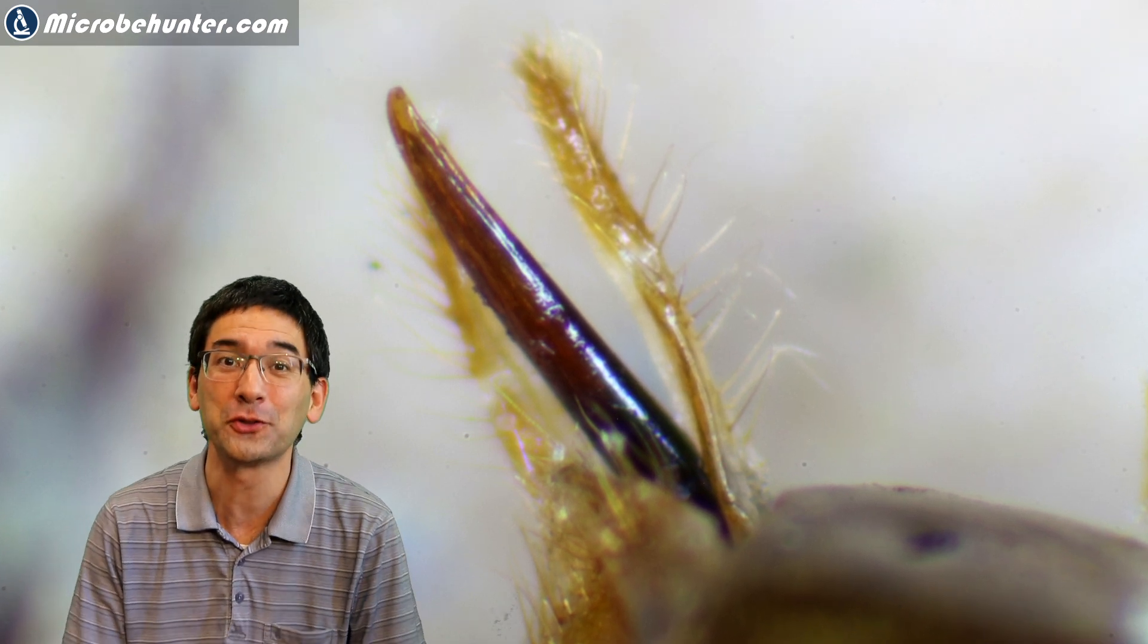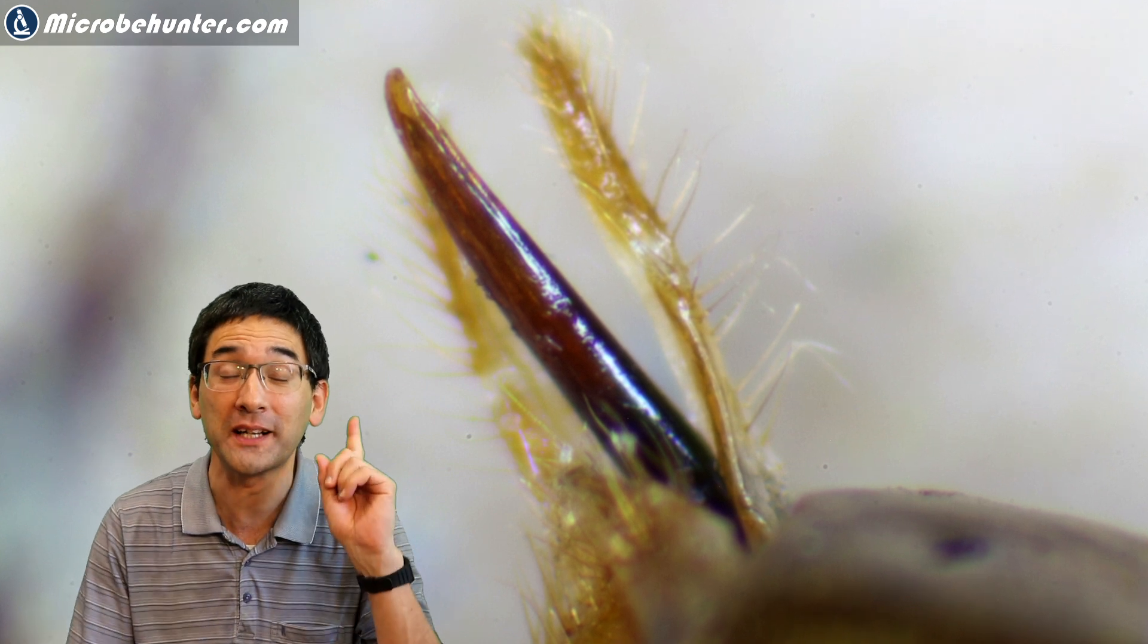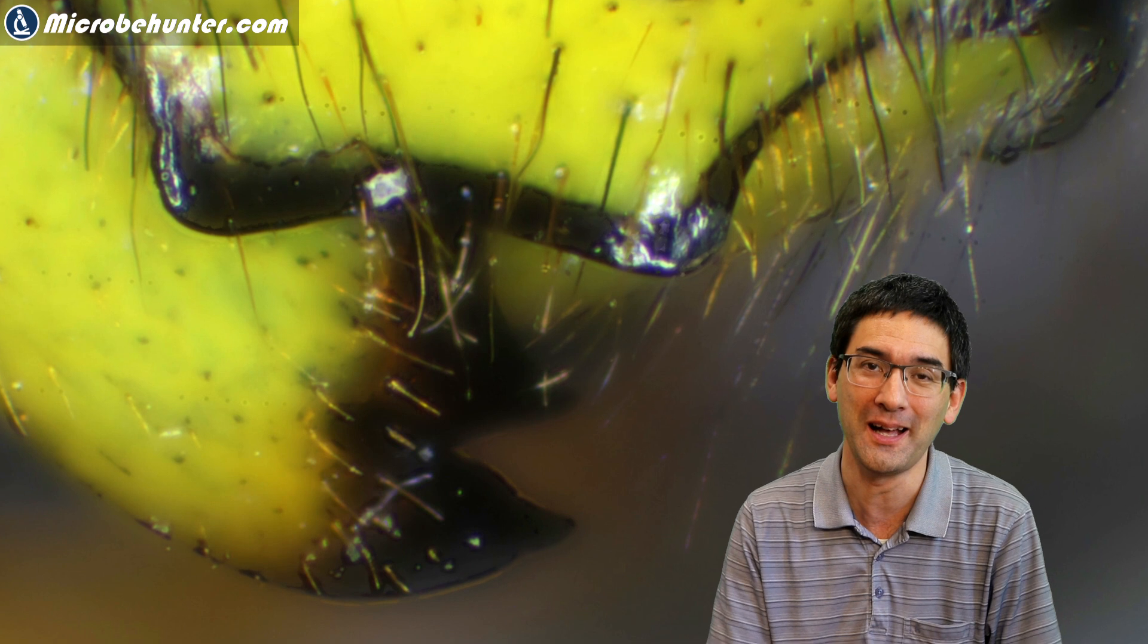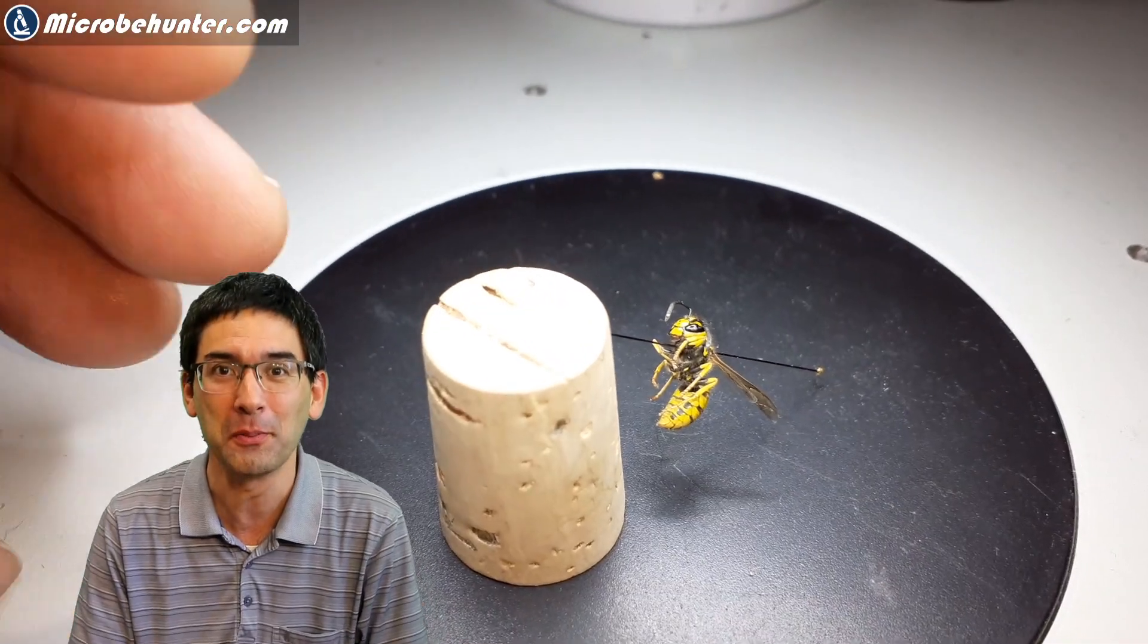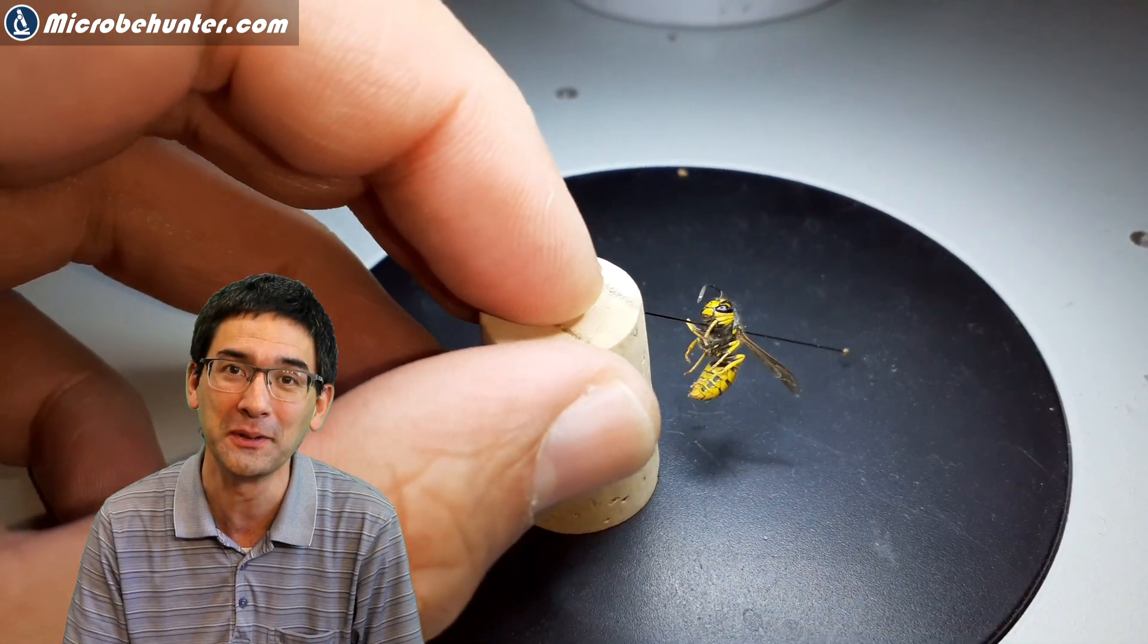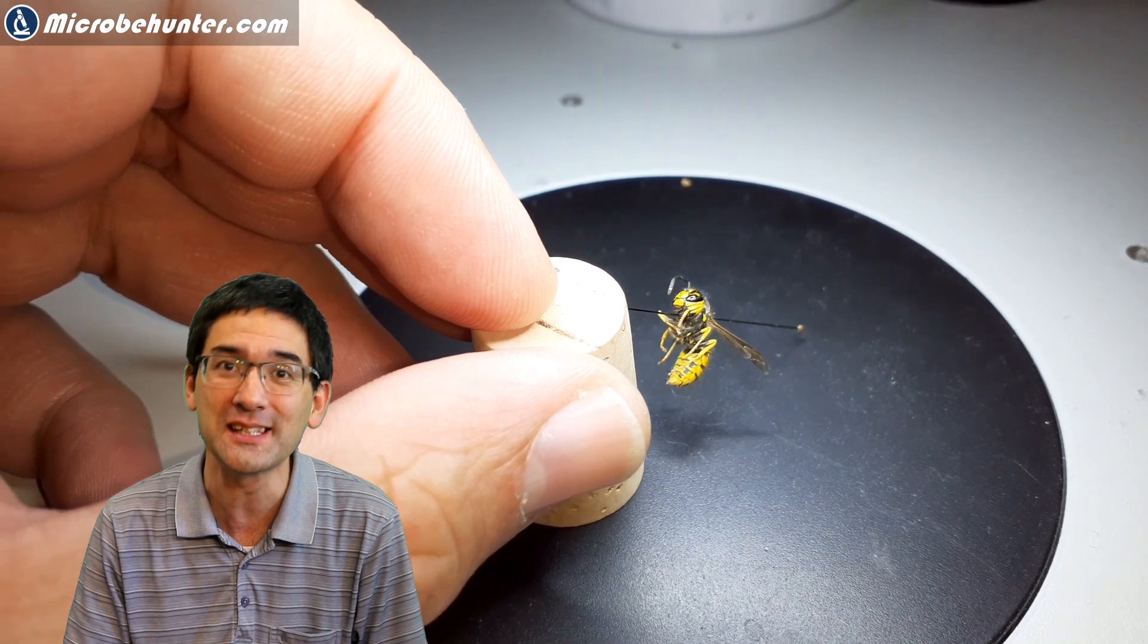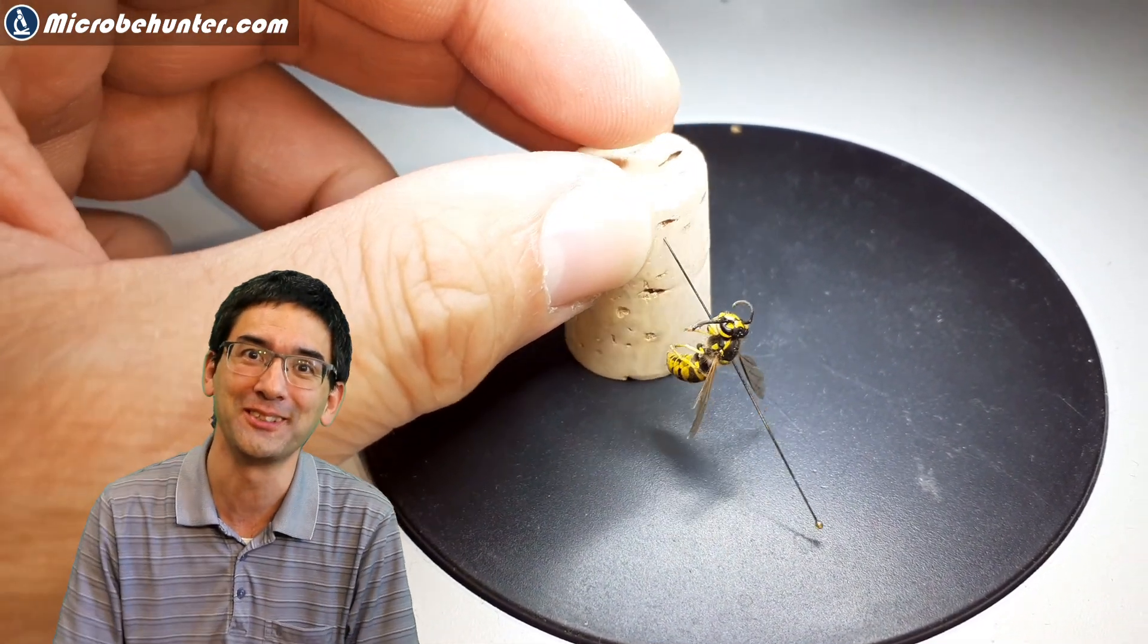Hi, hello, welcome. MicrobeHunter here and today I'm going to put a wasp under the microscope. As a matter of fact, what you see behind me is the stinger of a wasp and I'm also going to show you how I dealt with the wasp problem that I have here in my apartment because some of the wasps actually started to build a nest inside the wall. Stay tuned and let's get started.